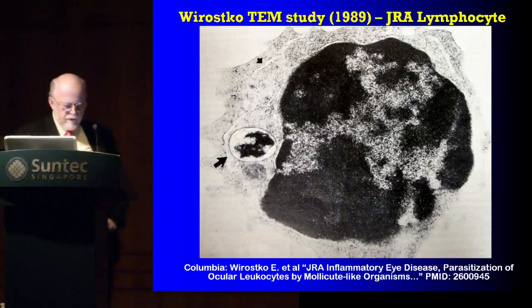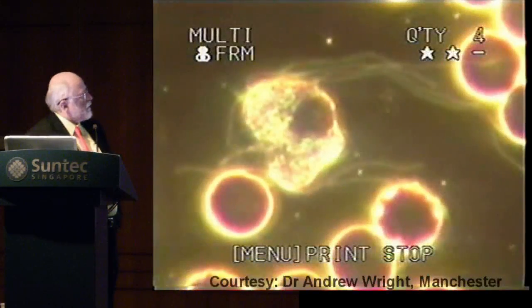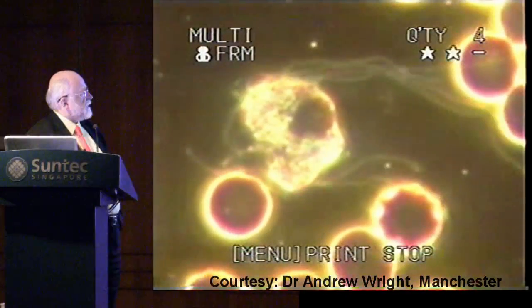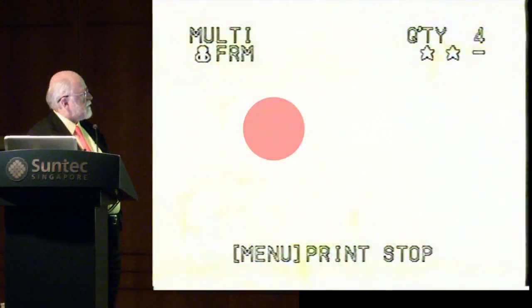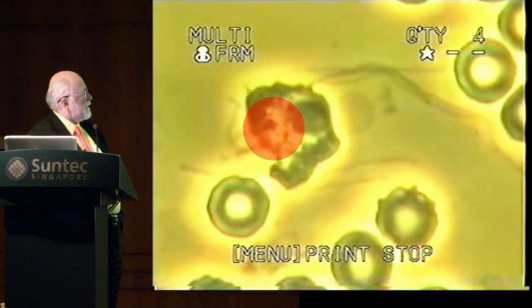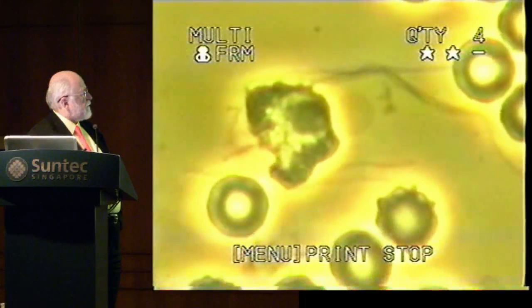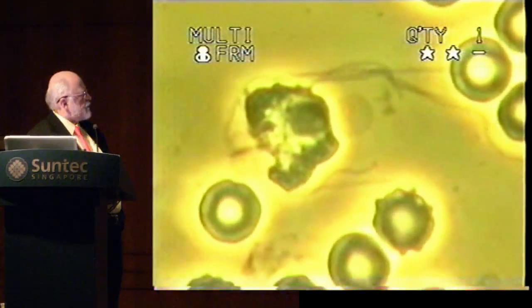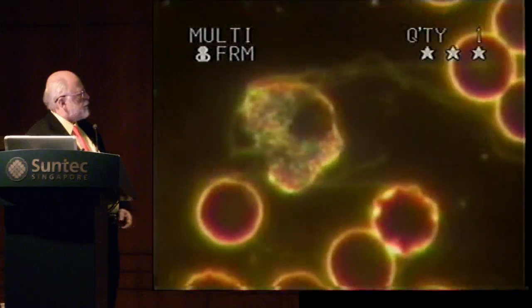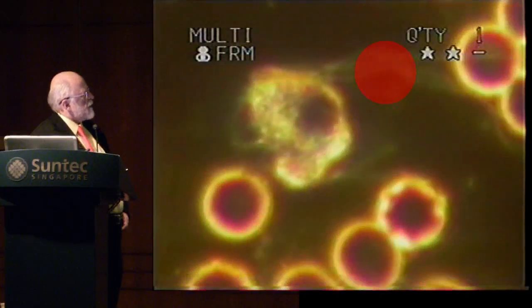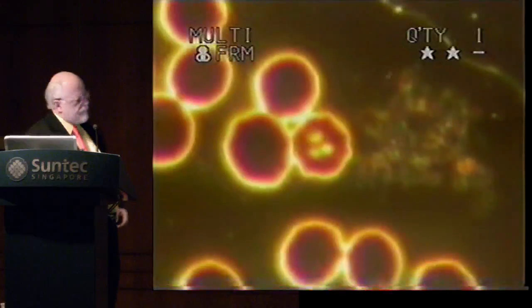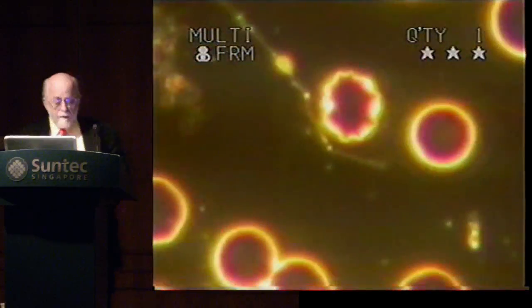We've been able to use light microscopy to show that as whole blood ages, cells that are infected — this looks like a monocyte infected, with its nucleus visible — the cytoplasm becomes very heavily infected, and as the blood ages and loses nutrients, the cytoplasm bursts apart and these really thin bacterial polymers are released into the blood environment.